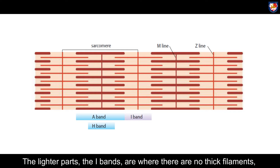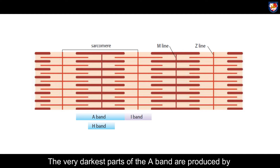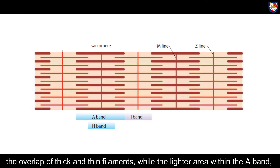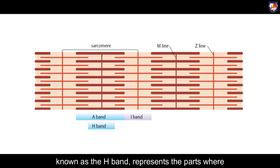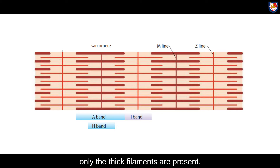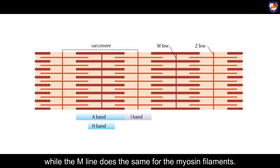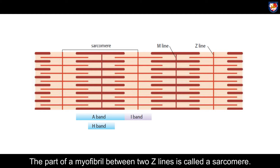The lighter parts, the I bands, are where there are no thick filaments — only thin or actin filaments. The very darkest parts of the A band are produced by the overlap of the thick and thin filaments, while the lighter area within the A band, known as the H band, represents the part where only the thick filaments are present. A line known as the Z line provides an attachment for the actin filaments, while the M line does the same for the myosin filaments. The part of the myofibril between two Z lines is called a sarcomere.